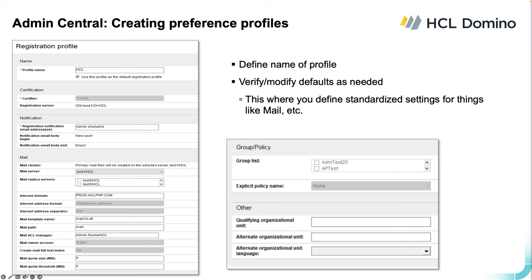The registration profile is fairly long. On the top part you put in the name of the profile. There is a checkbox to make it a default — if you set a default, when the junior admin goes to register a user, that profile will be picked automatically. Regarding notifications: you can list up to three admins who will receive an email for any user that gets registered, with a configurable body. We don't allow direct password entry — we create a secure password on the fly that gets sent as an encrypted email to the admin, including that password. The same process applies for password resets.